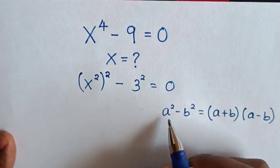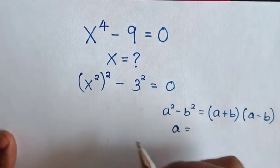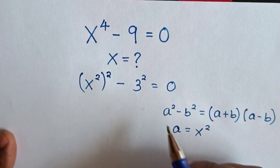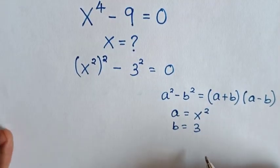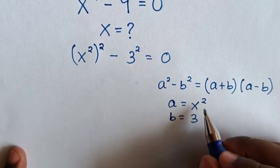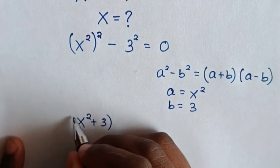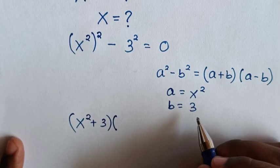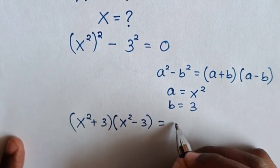When we compare a square with x square bracket square, a is equal to x square. And when we compare b square with 3 square, b is equal to 3. Substituting the values of a and b, it becomes x square plus 3 bracket times x square minus 3 is equal to 0.